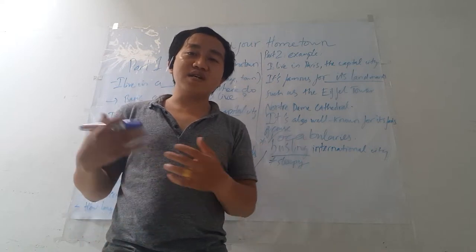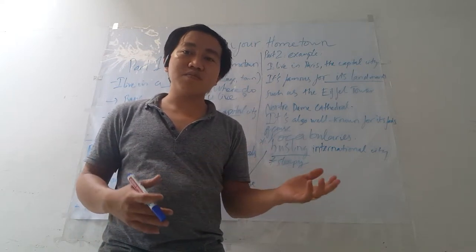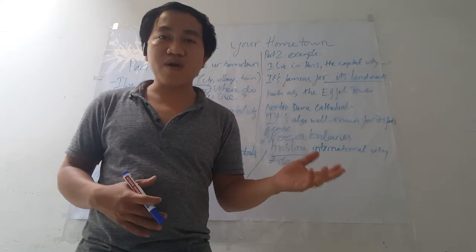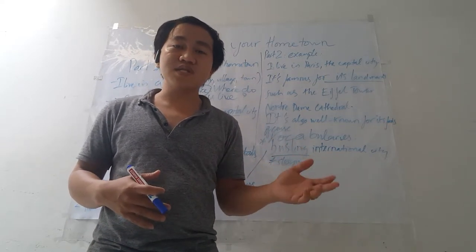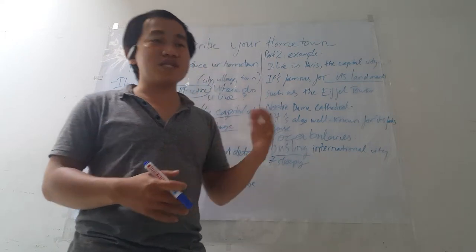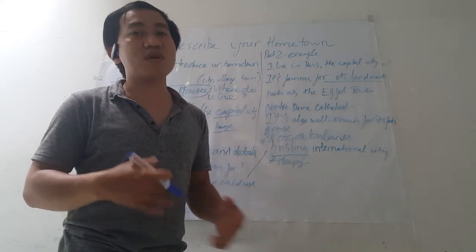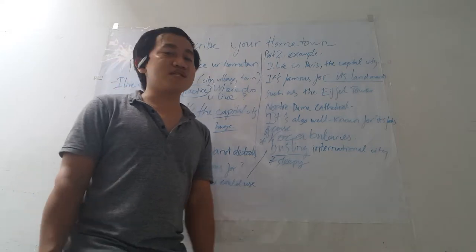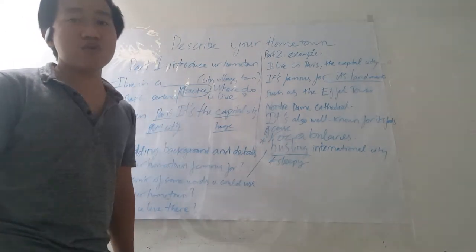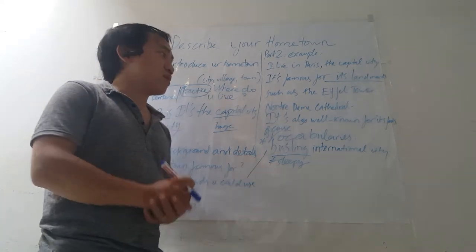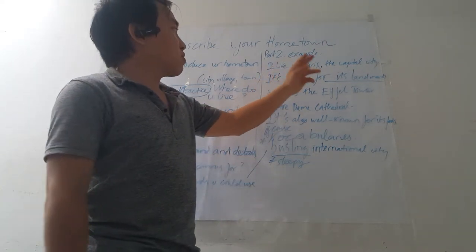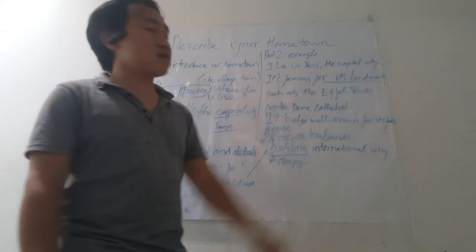I live in a small town called Montgomery. I've been living there for about five years, since I finished university. It's a really quiet place to live, to be honest. Now let's look at some useful vocabulary you can use when you speak. For example: Paris is famous for its landmarks such as the Eiffel Tower.